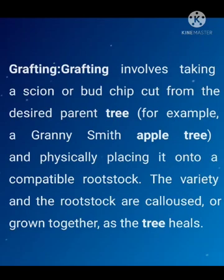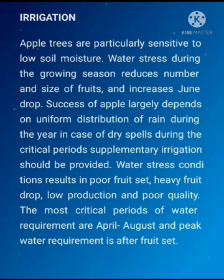Irrigation. Apple trees are particularly sensitive to soil moisture. Water stress during the growing season reduces the number and size of fruits and increases the June drop. Success of apple largely depends on uniform distribution of rain during the year. In case of dry spells during the critical periods, supplementary irrigation should be provided. Water stress conditions result in poor fruit set, heavy fruit drop, low production and poor quality. The most critical periods of water requirement are April to August, and peak water requirement is after fruit set.